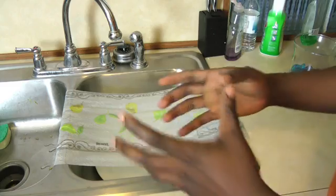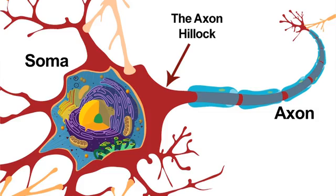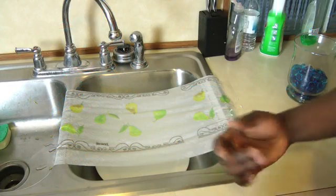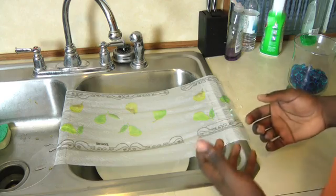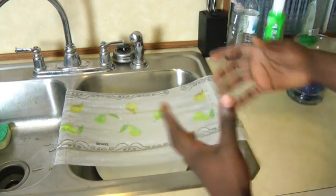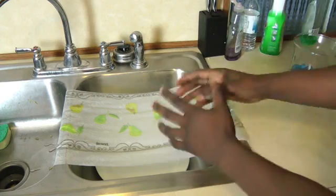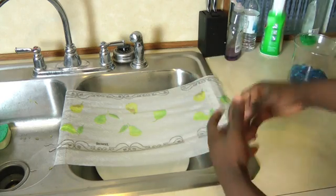The axon hillock is the place where the axon starts. We looked at the neuron and the parts of the neuron, and right where it goes from the soma to the axon, we have the axon hillock. That's the first place we see voltage-gated ion channels. In a previous episode, I spoke about the proteins in the membrane — you can go back to that and see what these voltage-gated ion channels do. This is where action potentials can start.